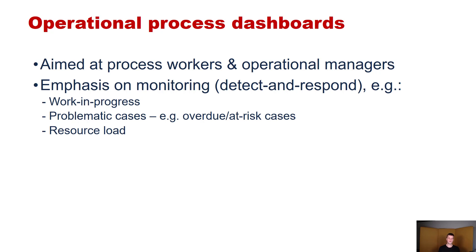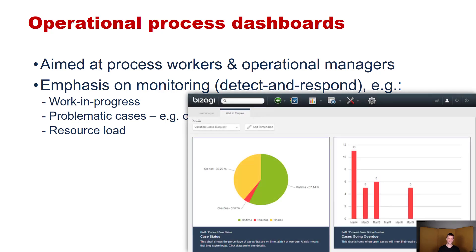As you saw on the previous slide, operational dashboards are usually based on live data or near-live data. An example of an operational dashboard is on your screen now. On the left, you can see a distribution of cases — some predicted to be on time, some known to be overdue, and some predicted to be at risk of being overdue in the future. On the right side, you can also see those cases that are going overdue when they are predicted to be overdue. This information gives an overview to process workers on how to manage their process and which process instances they should pay specific attention to.